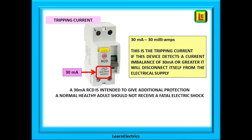This is because an RCD is not monitoring the amount of current but instead it is looking for very small current differences. If the RCD operates on a current difference or residual current of 30 milliamps — just 30 thousandths of an amp — then a normally healthy adult is unlikely to receive a fatal electric shock.